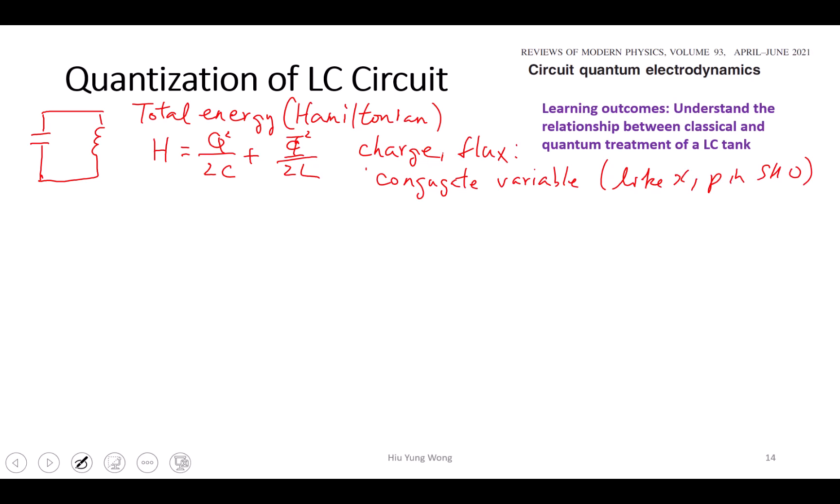Like X and P in simple harmonic oscillator. Then what does it mean? Now first look at some characteristics first. For this system, I know it has an impedance equal to square root LC.